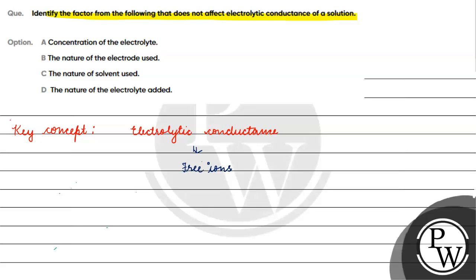If the concentration of the electrolyte is high, then the free movement of ions becomes restricted. If the free movement of ions is restricted, then the value of electrolytic conductance will be low. So when concentration of electrolyte is high, electrolytic conductance is low, because the free movement of ions decreases.